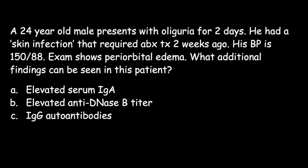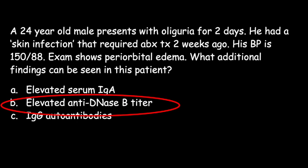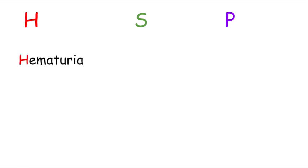An example of a type 2 hypersensitivity reaction is Goodpasture's disease. Post-strep GN patients have an elevated anti-streptolysin O, an elevated anti-DNase B titer, and a low C3. Now let's look at Henoch-Schönlein purpura. We can remember its clinical features using HSP: H for hematuria, S for skin rash, and P for palpable purpura on the buttocks and thighs.